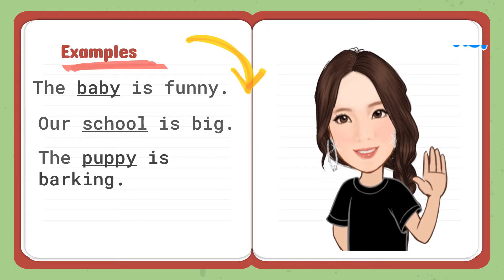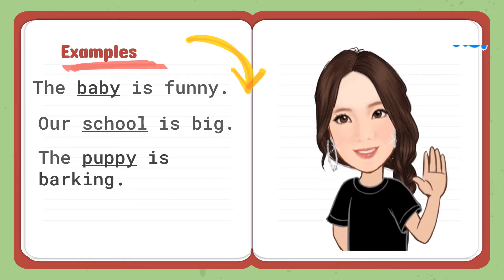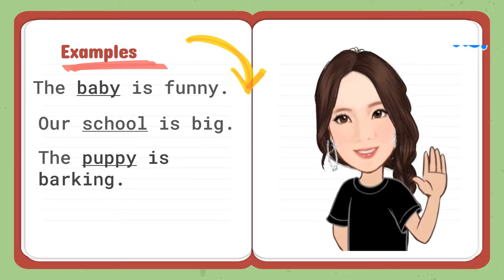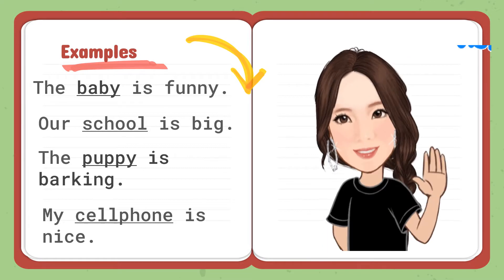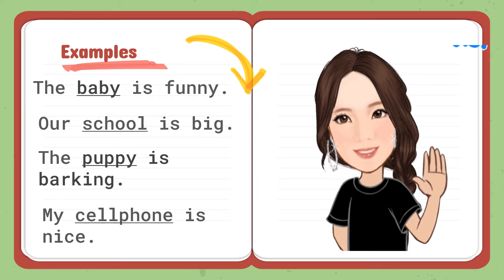The puppy is barking. Puppy is an example of a noun — puppy is under animal. My cell phone is nice. Cell phone is an example of a noun. A cell phone is an example of a thing.